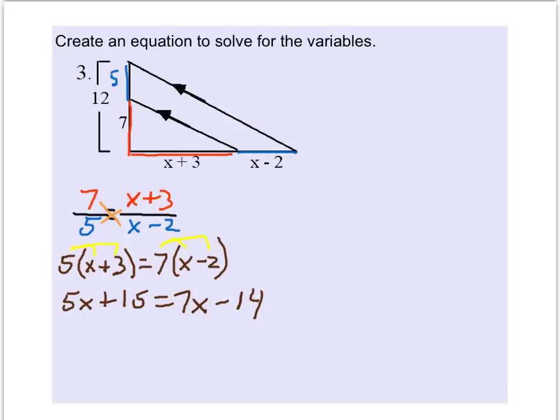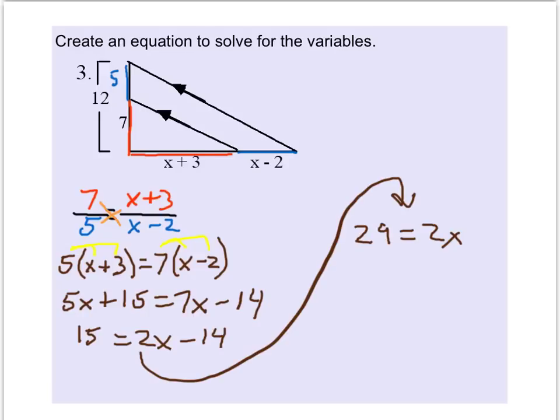And now we can subtract 5x from both sides. Add 14 to both sides. And so we get that x is equal to 29 halves.